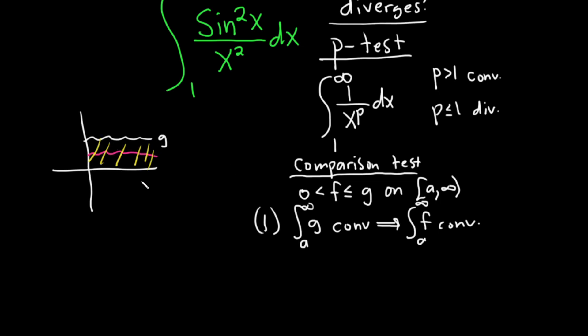But if the improper integral of g converges, that means that g has a finite area. Since f is smaller, it must also have a finite area. So pretty intuitive in some sense, right? f is smaller than g. If g has a finite area, then f also has one.